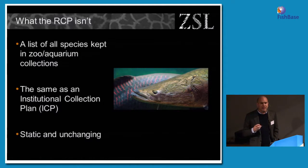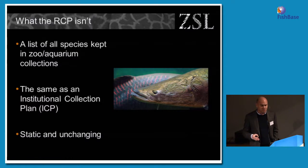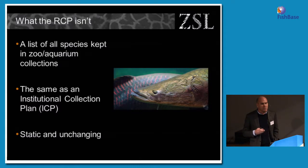There's been a lot of discussion and worry from some zoo and aquarium practitioners about what the RCP is meant to do. It's not meant to be an inventory or list of all the species kept in an individual collection — that's the job of the institutional collection plan. And it's definitely not a static or unchanging document. As new information becomes available, the RCP evolves and changes.